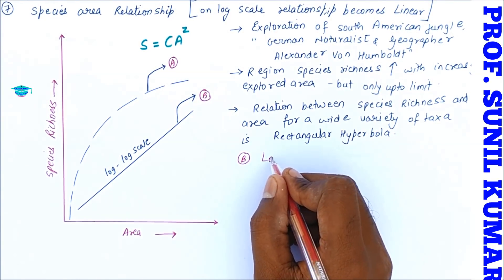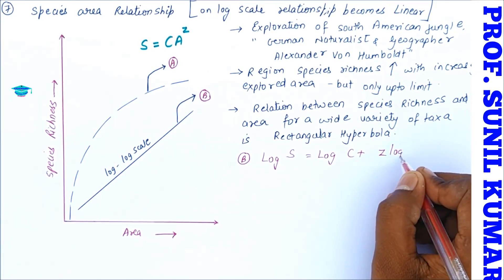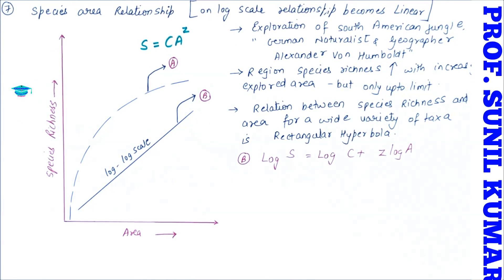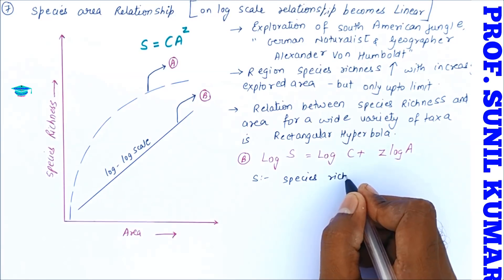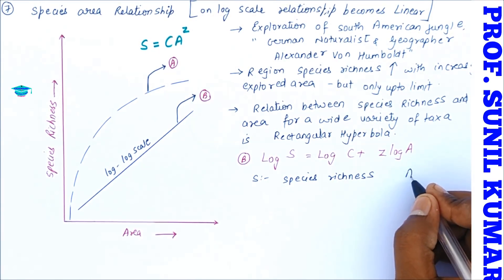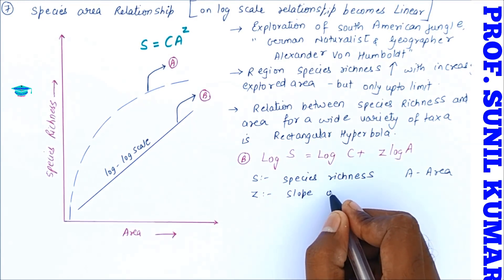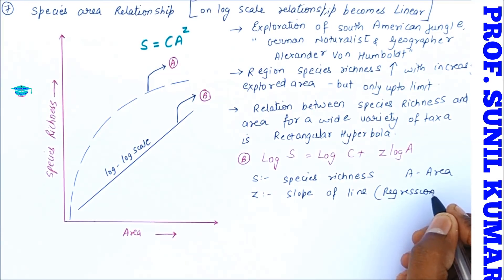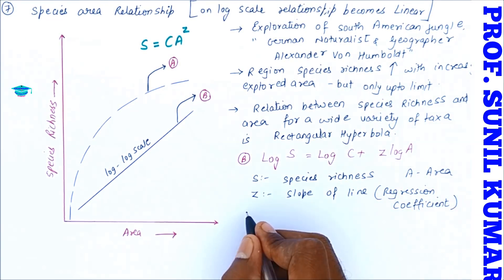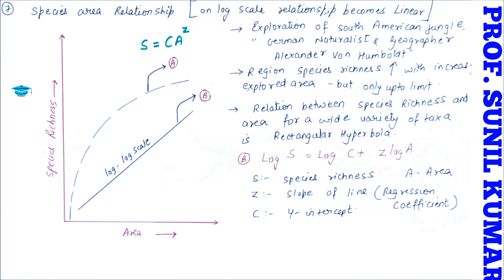Now let's see the second line which is a straight line, log-log scale line. It was given by one of the scientist in the name of Henry Gleason. What is said? If I put S is equal to log of C times A to the power z, so log S will be equal to log C plus z log A. So you need to understand here, this describes the second equation where S is species richness, A is the area, z becomes the slope of the line and slope of the line is basically a regression coefficient. When I talk about C, C is nothing but the y-intercept. So y-intercept will be constant, it's a unit for measurement.